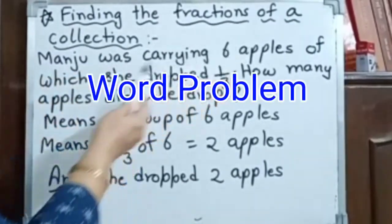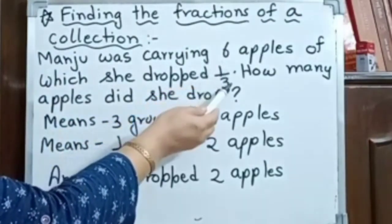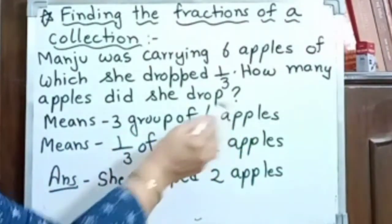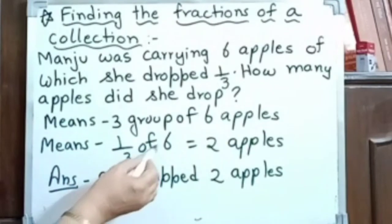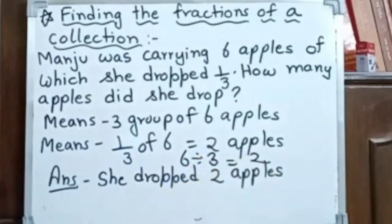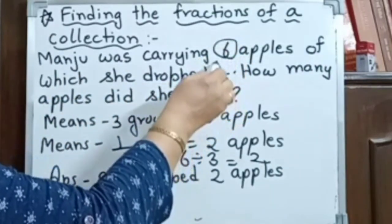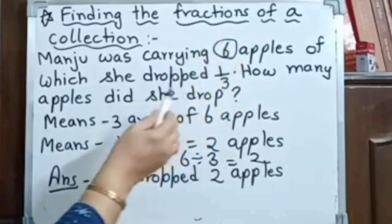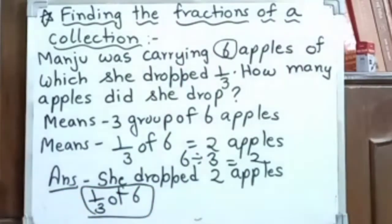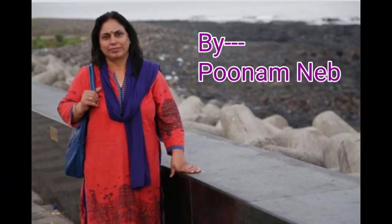Manju was carrying 6 apples, of which she dropped 1 by 3. How many apples did she drop? We need 1 by 3 of 6, so we divide 6 by 3. Using the table of 3: 3 twos are 6, so she dropped 2 apples. Whenever we have a fixed number and a fraction part, we divide. So 1 upon 3 of 6 means divide 6 by 3, giving 2 apples.